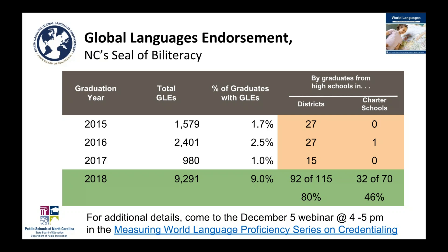Keep in mind that not every school in a district or every charter school has a high school or offers language instruction up to the level needed to earn the Seal of Biliteracy. We are going to talk more about the Global Languages Endorsement in an upcoming webinar, covering how students can earn it, how many languages they can earn it in, and the process involved. Please plan to attend the December 5th webinar in our Measuring World Language Proficiency series, focused on credentialing.